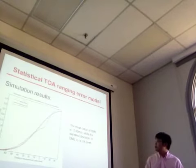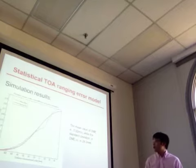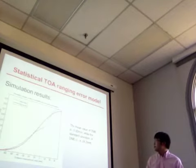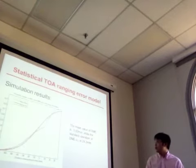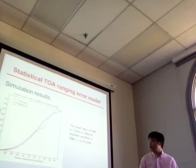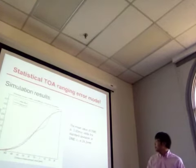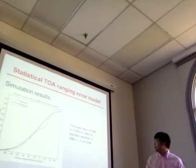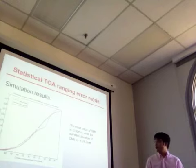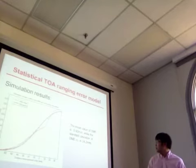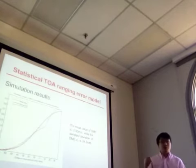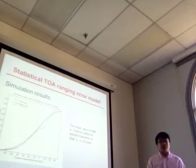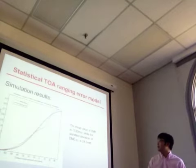After modeling the data, we found that the distance measurement error of TOA ranging follows a Gaussian distribution, with a mean of approximately -3.92 millimeters and a standard deviation of around 2.5 centimeters. These values are used later in calculating the Cramér-Rao lower bound for TOA-based localization.